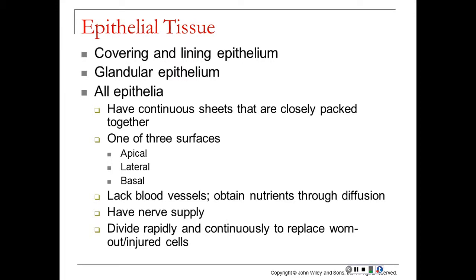All epithelial tissues lack blood vessels and get their nutrients through diffusion, which is why cutting your skin won't bleed unless you've gone through the epithelium into the dermis layer. Epithelial tissue does have a nerve supply, however. These cells divide rapidly and continuously replace worn-out or injured cells, which makes sense since epithelium is exposed to abrasion and friction, so there's lots of mitosis occurring.